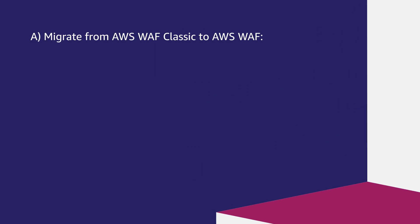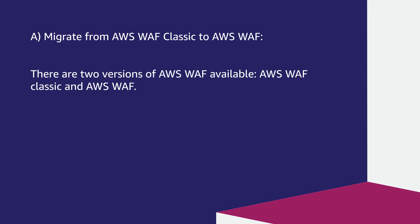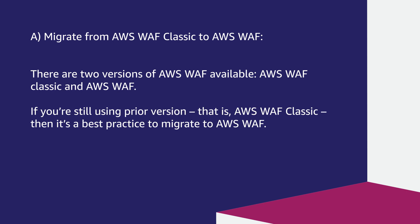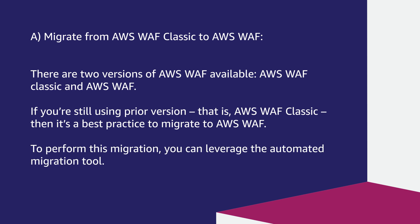Migrate from AWS WAF Classic to AWS WAF if applicable. There are two versions of AWS WAF available: AWS WAF Classic and AWS WAF. If you are still using the prior version, that is AWS WAF Classic, then it's a best practice to migrate to AWS WAF. To perform this migration, you can leverage the automated migration tool. To find out more, view the Migrating Web ACL automated migration documentation linked on the associated Knowledge Center article.